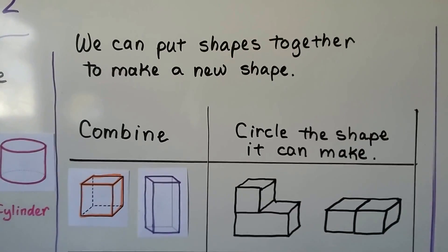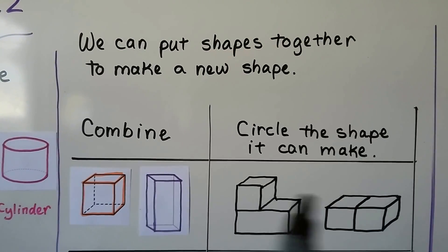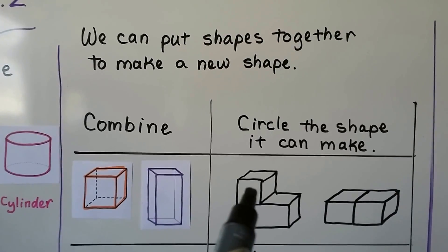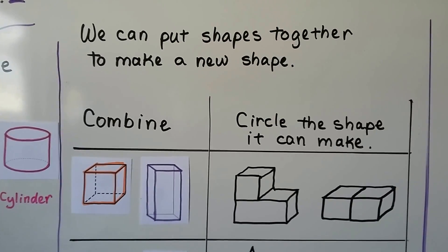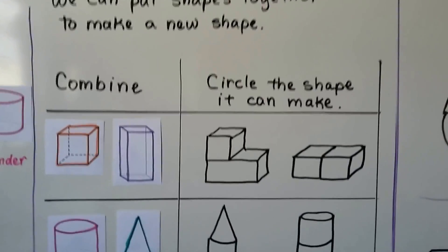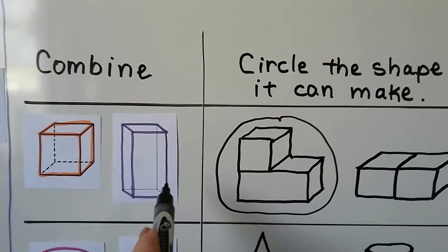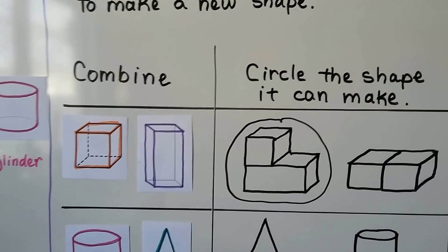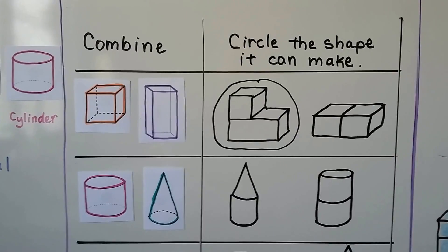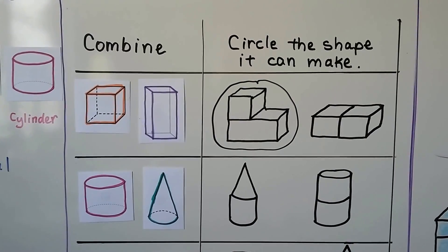Now we can put shapes together to make a new shape. We have a cube and a rectangular prism — we need to circle which shape it can make. Do you think it'll make this shape or that shape? If you said this one, you're right. We can lay the rectangular prism down sideways and put the cube on top of it. This other option is just two cubes making a rectangular prism.